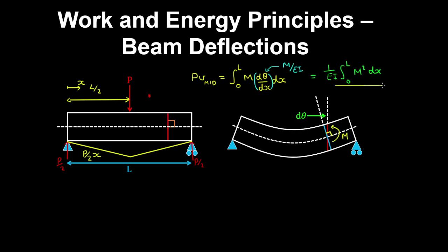Therefore the internal work done due to the deformation of the beam can be written as 1 on EI by the integral from 0 to L on 2, with the bending moment P on 2 times x, squared and integrated over x. Due to symmetry, we multiply this by 2 to get the work done over the entire beam, and that equals the work done by the external force, which is P by the deflection at mid-span.